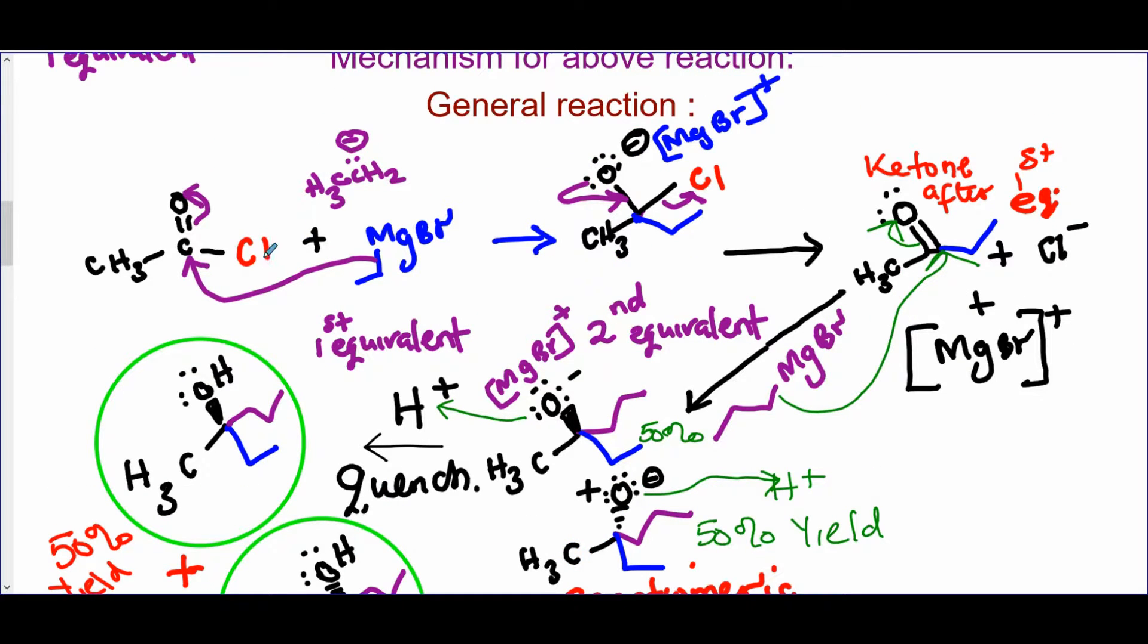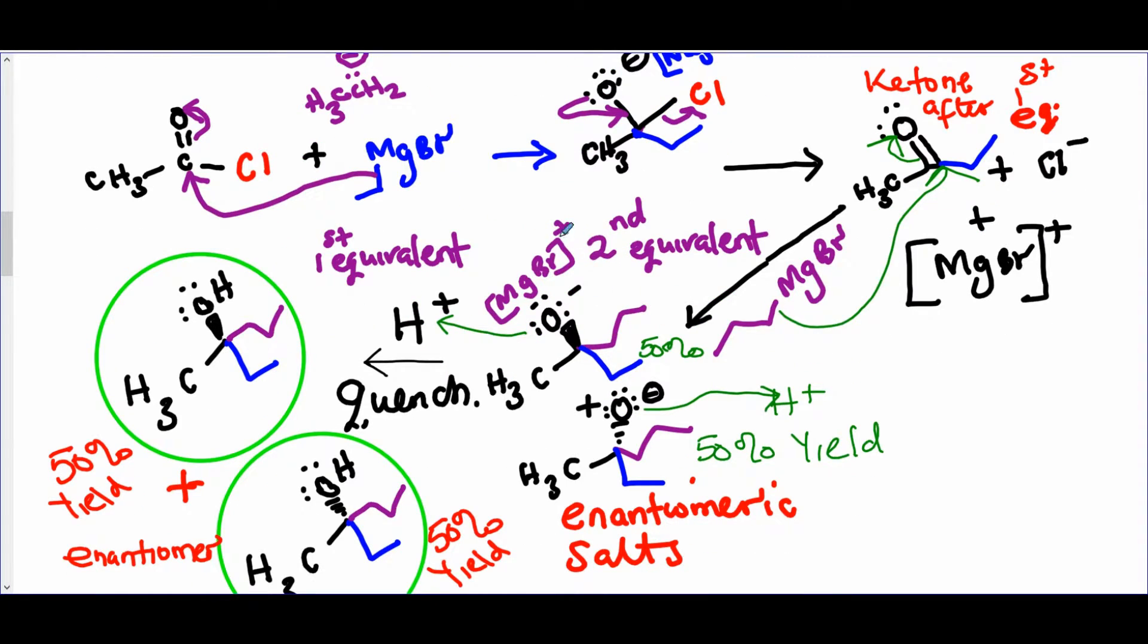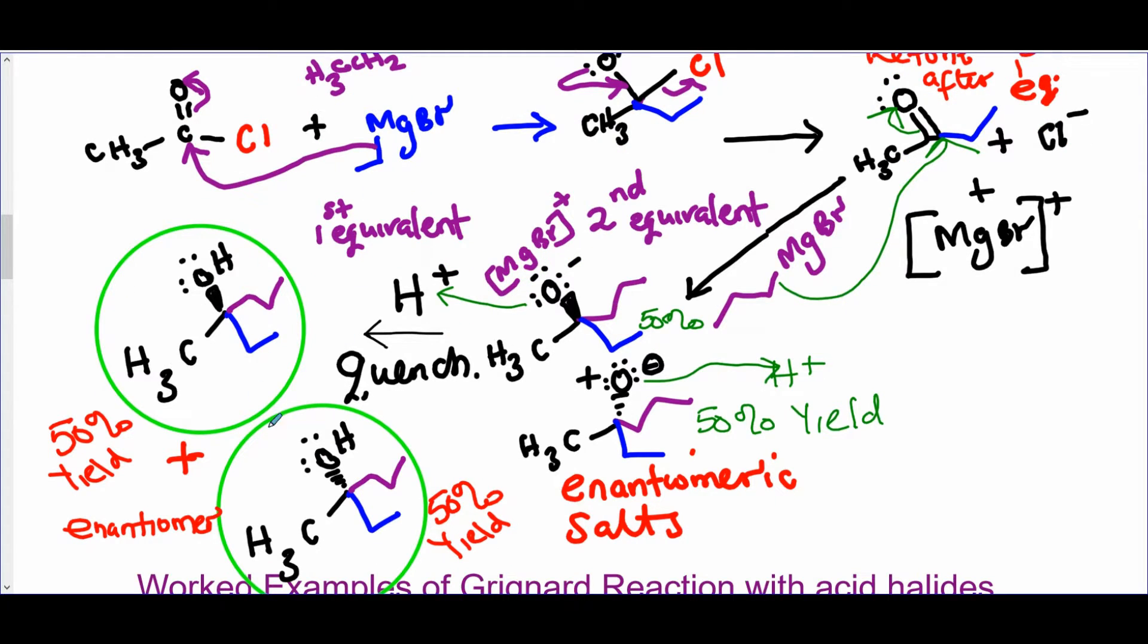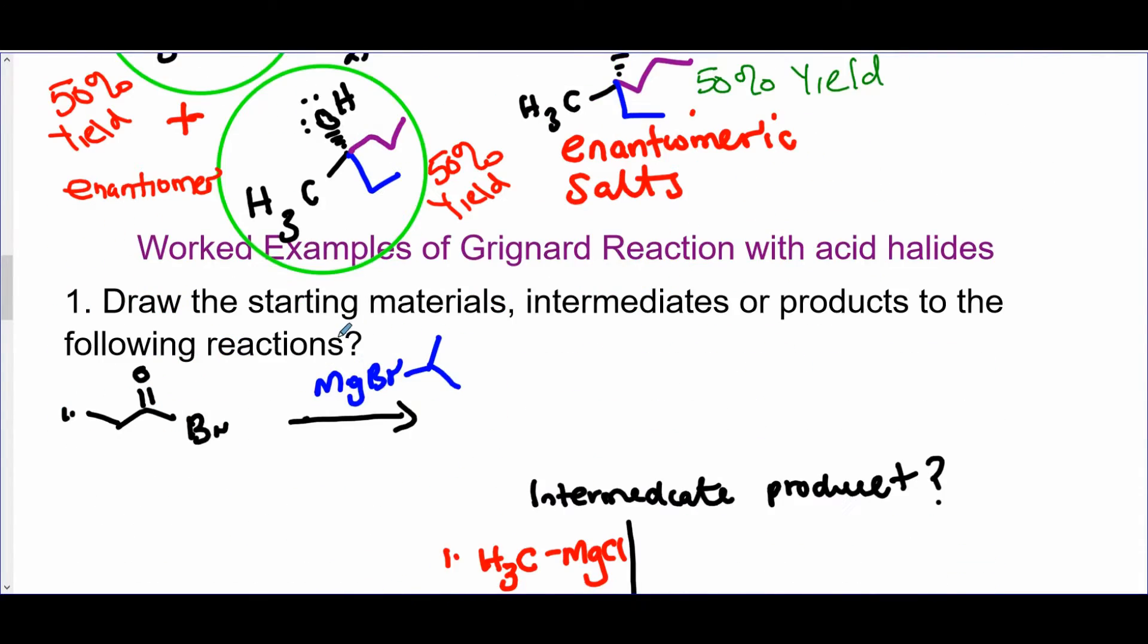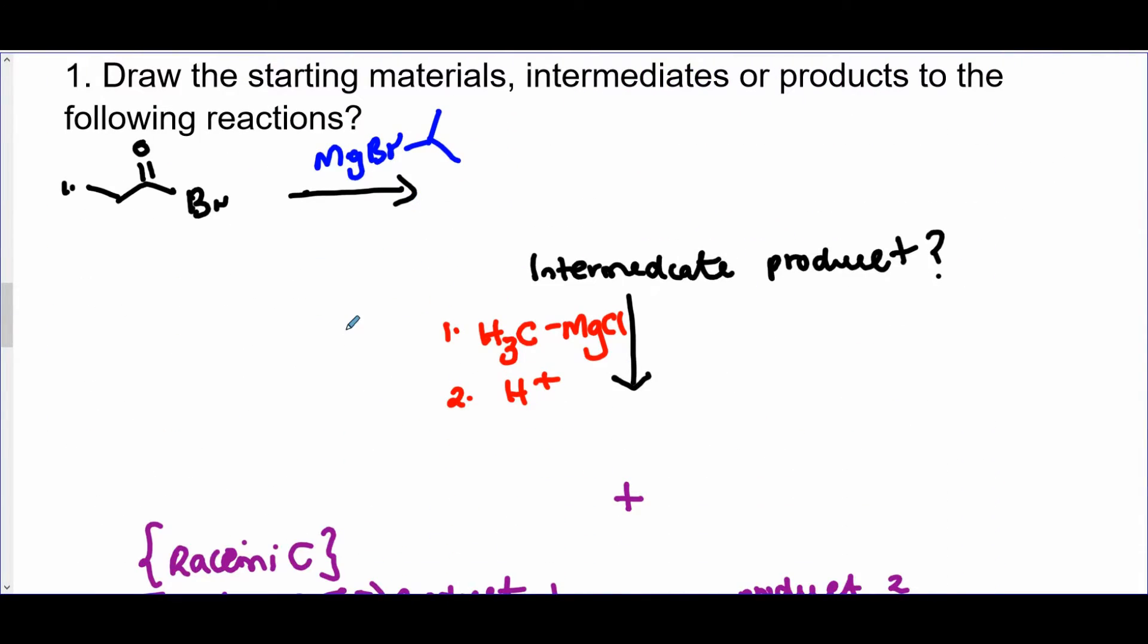So that's a general mechanism of Grignard reaction on acid chlorides or acid halides. This chloride could be a bromide, could be an iodine. This halogen here could be a chloride, a bromide, or an iodine. So it depends on what you're given. And also, if you're using two equivalents of these, you're not going to end up with enantiomers because that carbon will no longer be asymmetric.